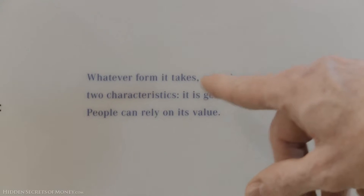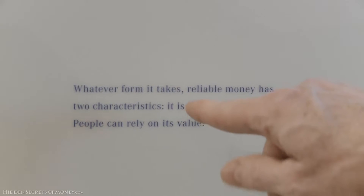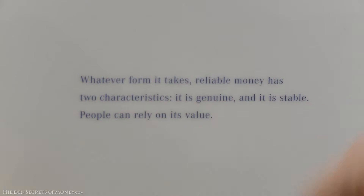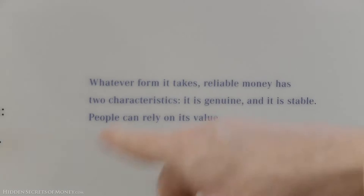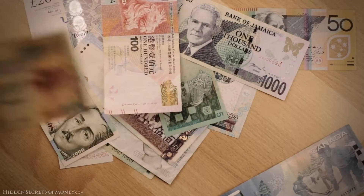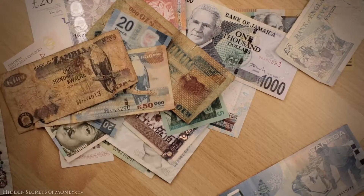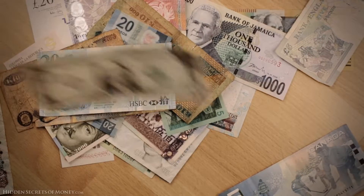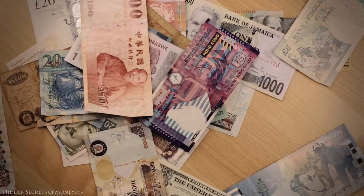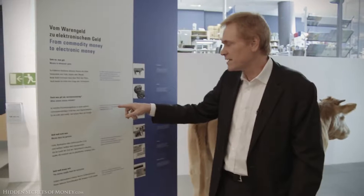Whatever form it takes, reliable money has two characteristics: it is genuine and it is stable. People can rely on its value. But what fiat currency around the planet has maintained its value? They all fall in value. So right away you can see they're talking about currency here — not money. And when they say it's genuine, what is genuine?